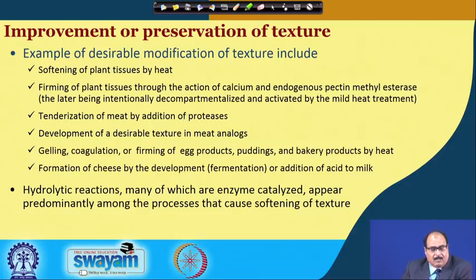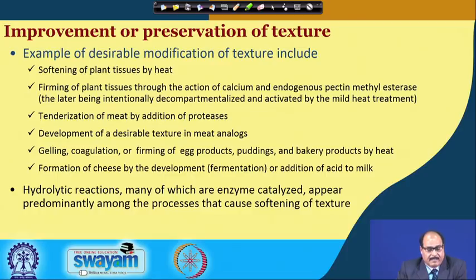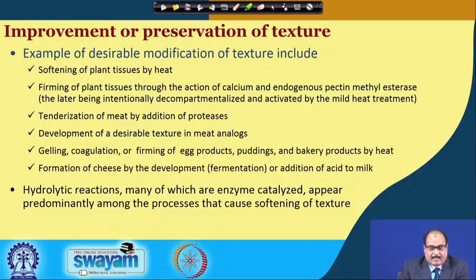Regarding improvement or preservation of texture, examples of desirable modification include softening of plant tissues by heat, firming of plant tissues through the action of calcium and indigenous pectin methyl esterase, tenderization of meat by addition of proteases, development of desirable texture in meat analogues, gelling, coagulation or foaming of egg products, coatings in bakery products by heat, and formation of cheese by development or addition of acid to milk. Certain hydrolytic reactions, many of which are enzyme catalyzed, appear predominantly among the processes that cause softening of texture.